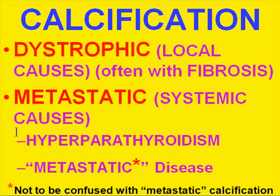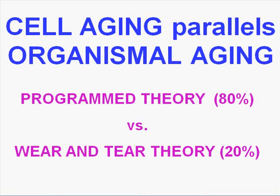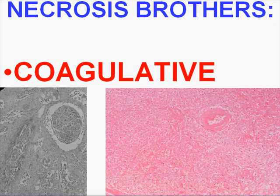Cells die for pretty much the same reasons people die. Cells die because it's their time to die. The wear-and-tear theory suggests limiting tissue stress prolongs life, but the programmed theory of cell death is the mainstream view. On a cellular level, there's really not much you can do to prolong life beyond the usual healthy behaviors. One more important point — we failed to mention the most common necrosis of all: coagulative necrosis. Consider this a brief addendum.